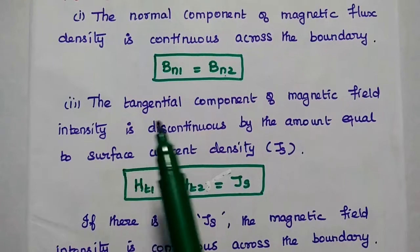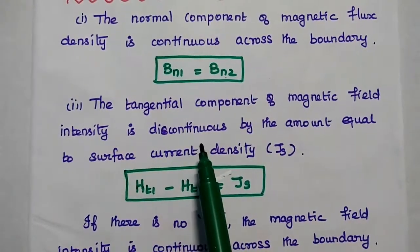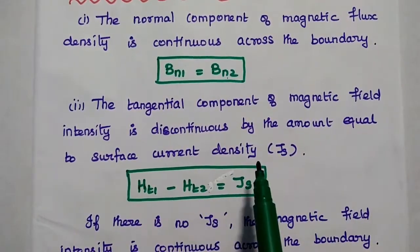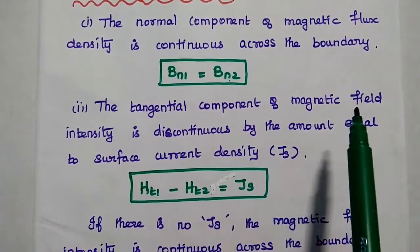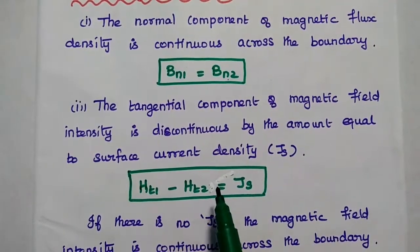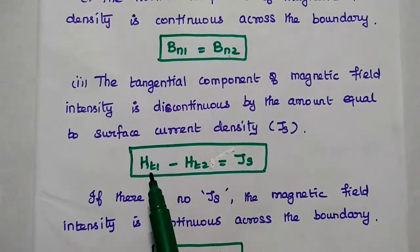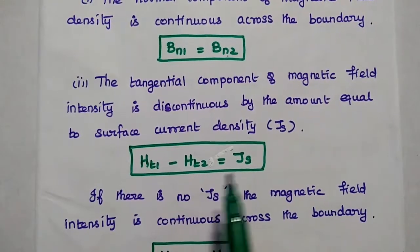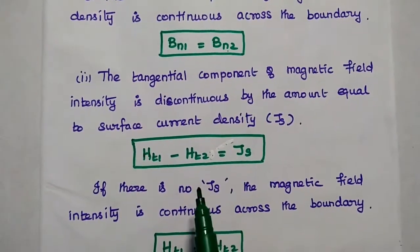The second condition is: the tangential component of magnetic field intensity is discontinuous by the amount equal to the surface current density. The tangential component of magnetic field intensity is discontinuous — discontinuous means both are not equal, so there may be some difference. The difference between these two tangential components of magnetic field intensity is equal to the surface current density.